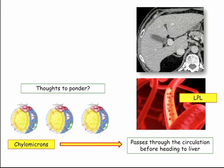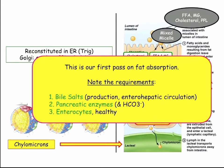To absorb fat, you need bile salts, pancreatic enzymes including neutralized lipase and colipase, and enterocytes. You need enterocytes to absorb fats. Later on, when we get to malabsorption, if you don't have enterocytes, you're going to get fat malabsorption and steatorrhea. That's the process of fat absorption and chylomicron synthesis.